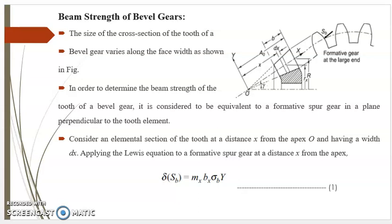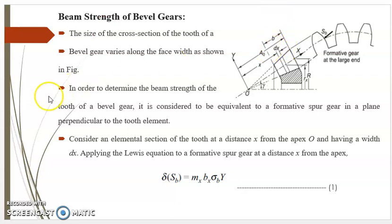Now we will see beam strength of bevel gears. The size of the cross-section of the tooth of a bevel gear varies along the face width as shown in the figure. In order to determine the beam strength of the tooth, it is considered equal to a formative spur gear in a plane perpendicular to the tooth element. Consider an elemental section of the tooth at a distance x from the apex, having a width dx. Applying Lewis's equation to a formative spur gear at distance x from the apex.